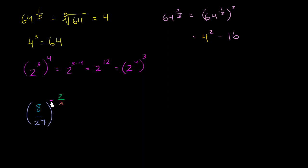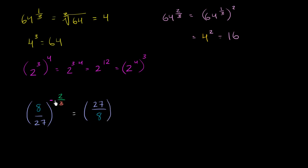The first thing I do when I see a negative exponent is ask how I can get rid of it. A negative exponent means take the reciprocal of the base raised to the positive exponent. So this is equal to 27 over 8 — the reciprocal of 8 over 27 — raised to the positive 2/3 power. I got rid of the negative exponent and took the reciprocal of the base.